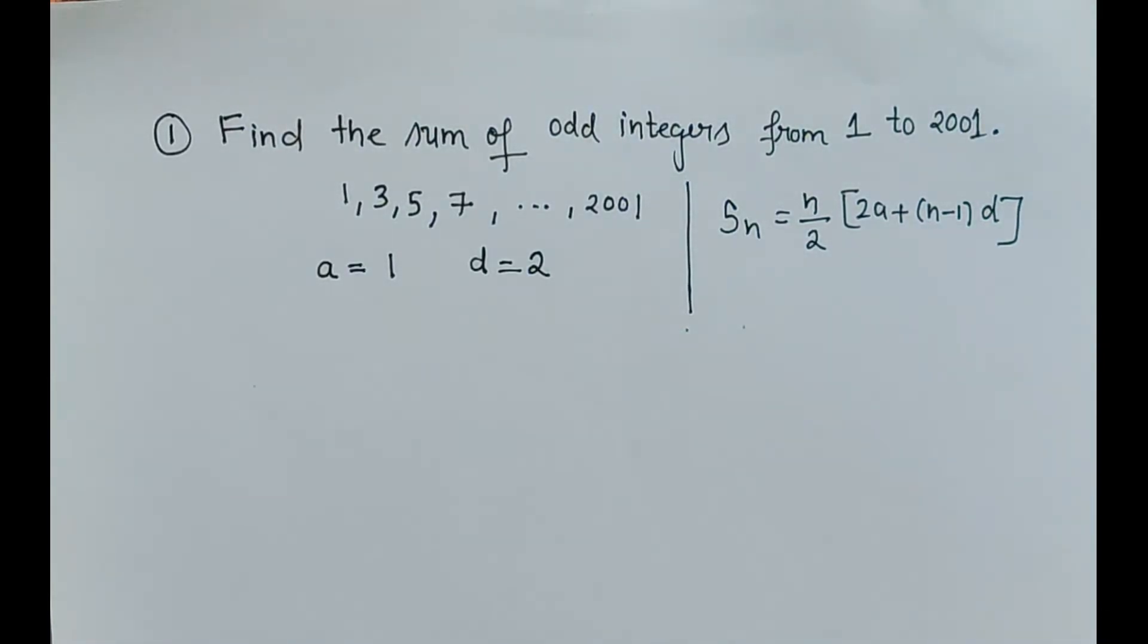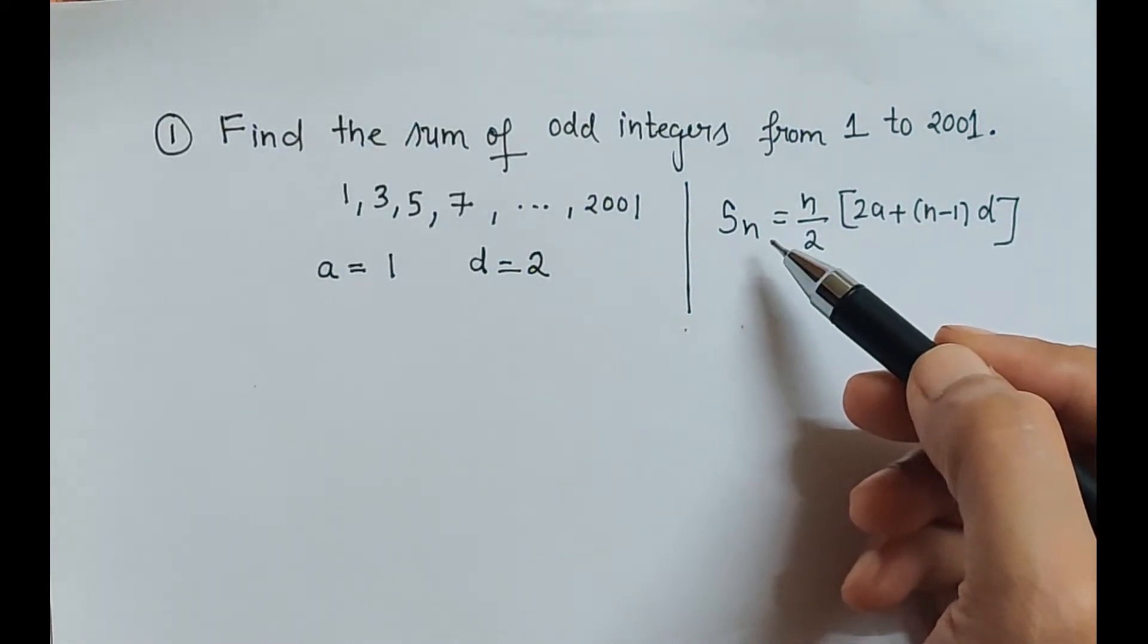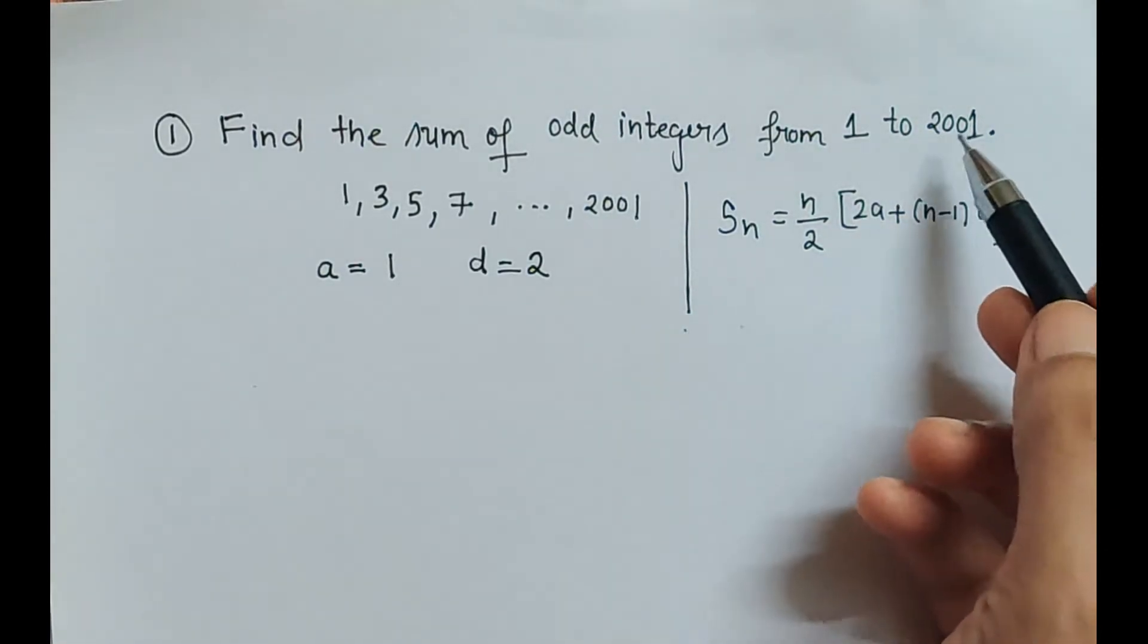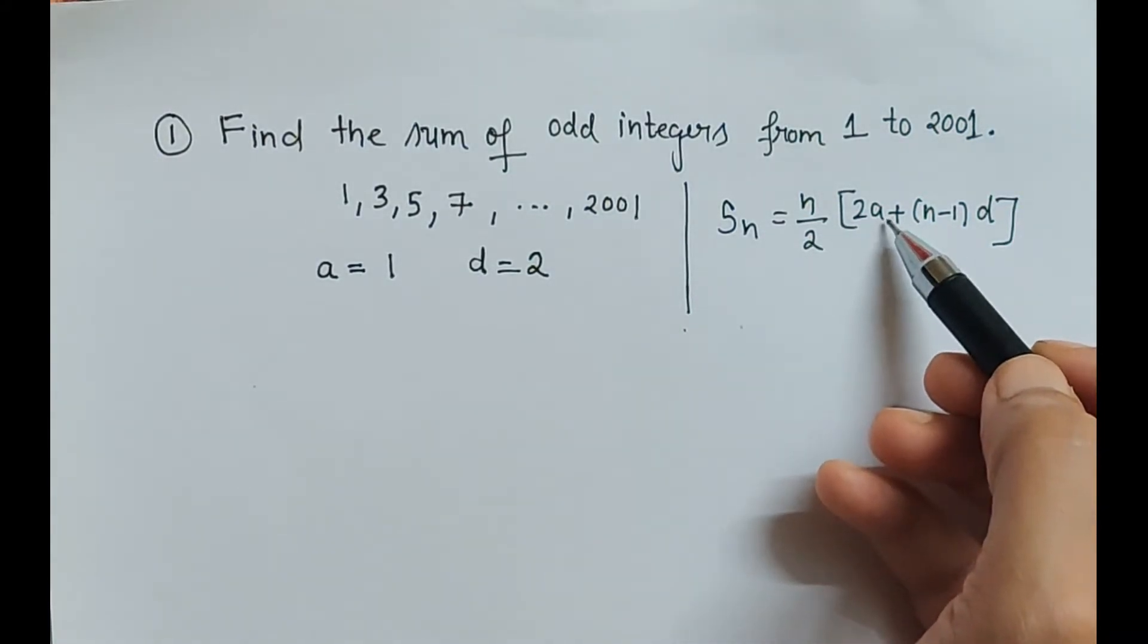But do we know which term is this 2001? Because sum up to n terms is calculated by this formula, but we are not aware here that how many terms are there in this. That means we are not aware of the value n.